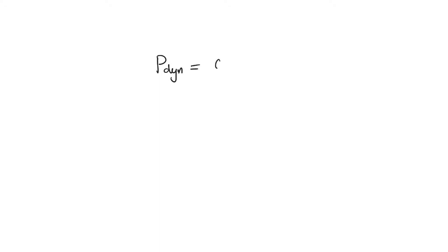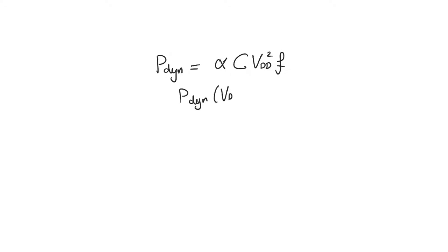Dynamic power is equal to alpha times C times V_DD squared times f. For starters, we see that dynamic power is a quadratic function of power supply, which is a very strong function of power supply.